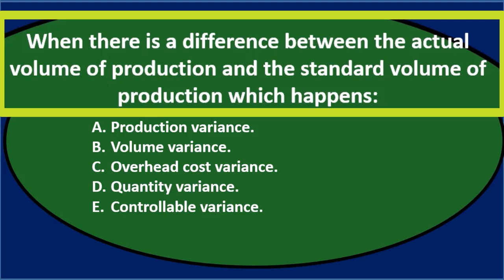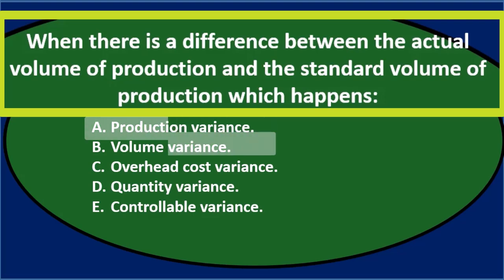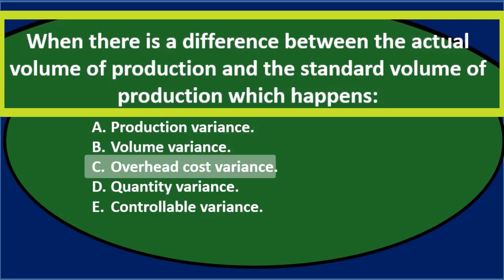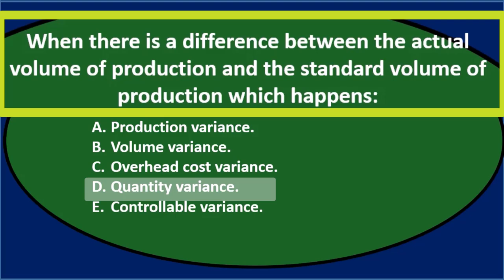First question: When there is a difference between the actual volume of production and the standard volume of production, which happens? A. Production variance. B. Volume variance. C. Overhead cost variance. D. Quantity variance. Or E. Controllable variance.